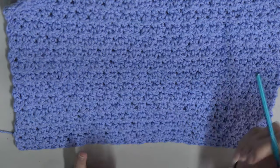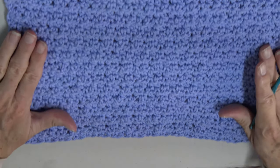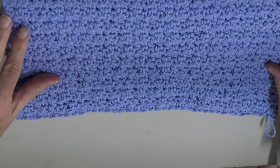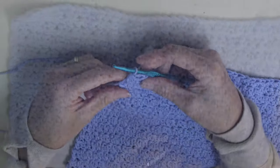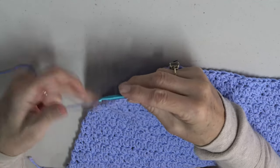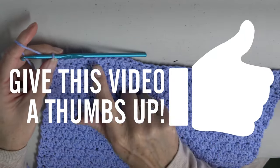So we're going to get ready and we're going to put a border on this, which will frame it up really nice. So I'm going to do a border of double crochets all the way across and that will just give it a nice frame for a really cool pattern.